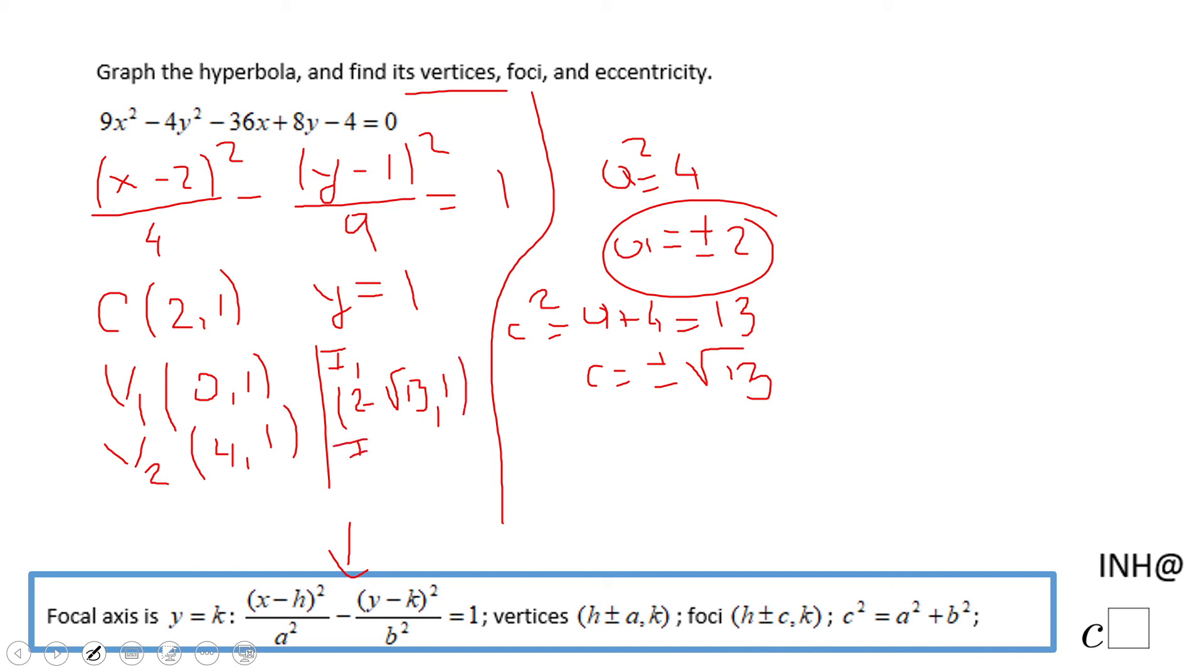And the second vertex will move right from (2, 1), so that will be (2 + √13, 1). And we finish with the foci.